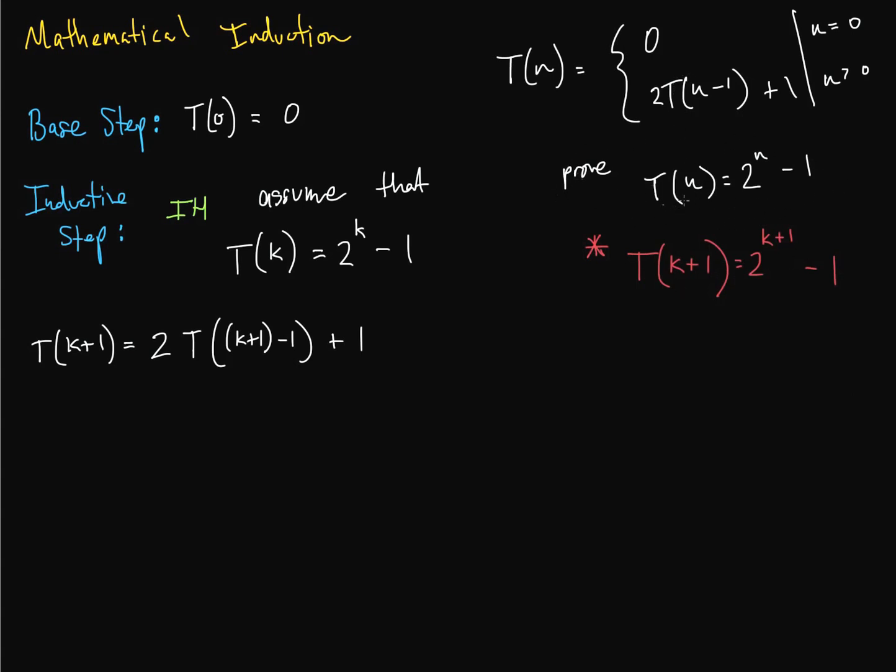We haven't necessarily proved this part just yet. So we have to use what is assumed to be true, this and this. So we just do a little algebra in here, and we end up with 2 times T(k) plus 1. That's pretty good.